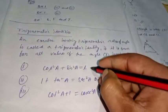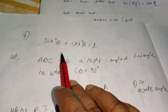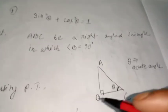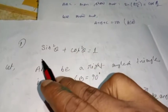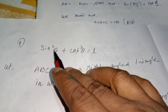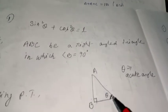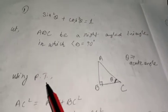I will now give a theoretical proof for identity number one. For the first identity, sin²θ + cos²θ = 1, let ABC be a right-angle triangle in which angle B is 90°. Here θ represents the acute angle — I am taking angle C as θ, the acute angle.